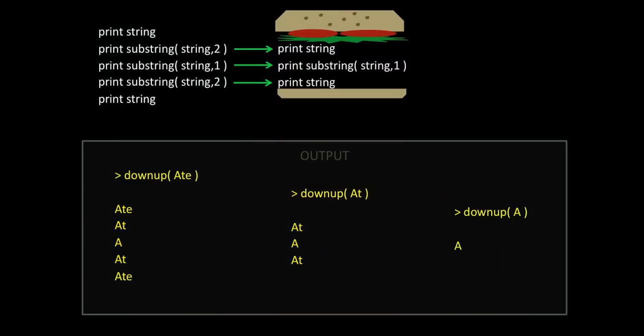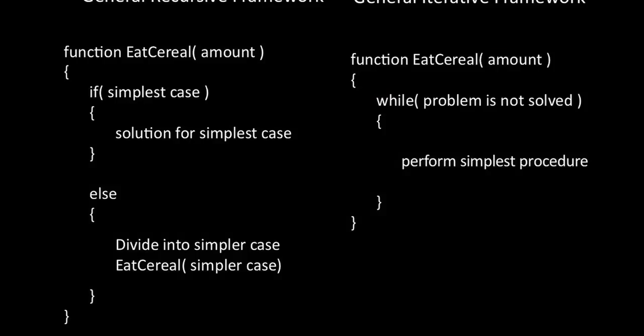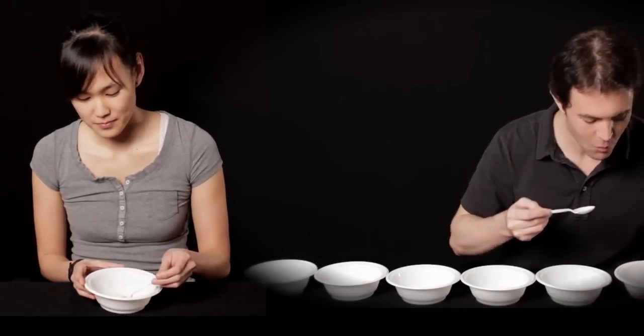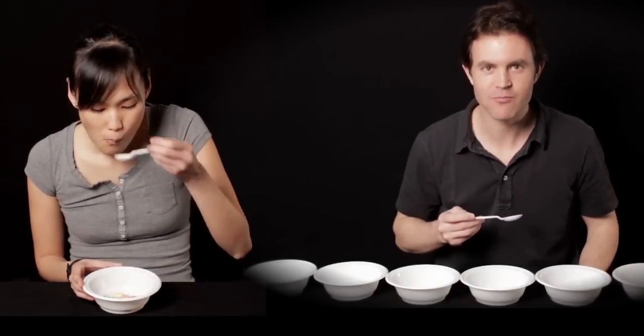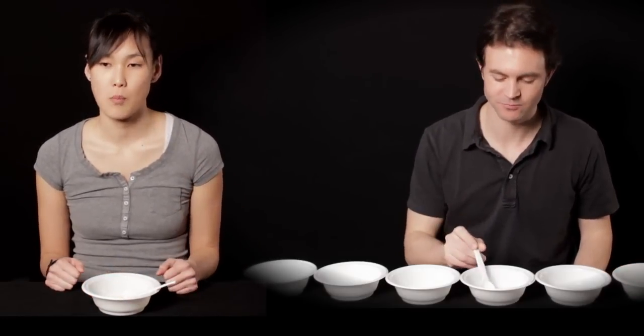In this video, we showed you how recursion and iteration take advantage of a computer's ability to repeat simple tasks. To approach a complicated programming problem, first solve some simpler versions and try to identify a pattern. Then, depending on the type of pattern you find, fill in a recursive or iterative code framework. And remember, iterative, recursive, and even mixed solutions to a single problem may all be correct.